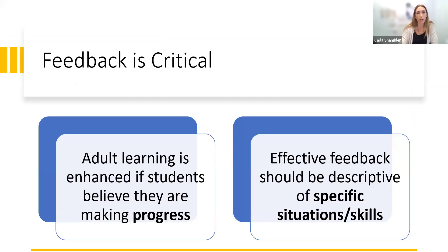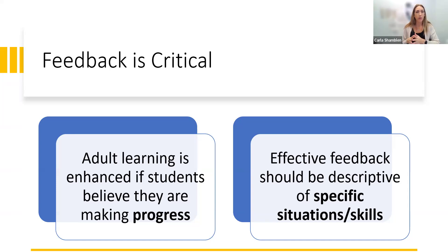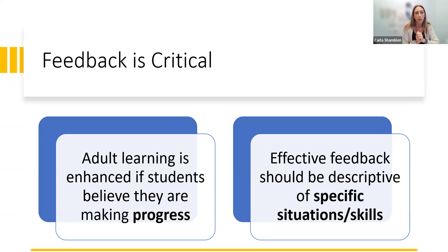In higher education, adult learning is really enhanced if students believe they're making progress, if they're setting goals and can see themselves reaching those goals or at least making efforts to achieve them. Effective feedback means identifying specific situations or skills and providing feedback that is either corrective or reassuring about what is done well and what could be improved. Being very specific and explicit is really important when giving effective feedback.